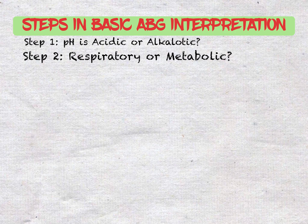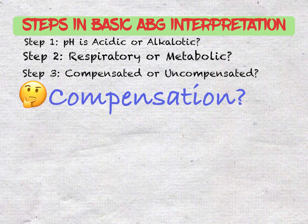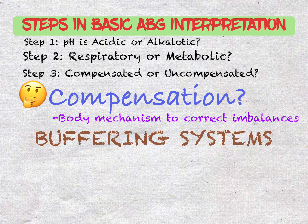The third step is knowing if the ABG is compensated or uncompensated. Compensation is the body's attempt at correcting an imbalance. In ABG analysis, we always examine whether there is compensation in this very tight balance between the concentration of acids and bases in the blood. There are different buffering systems in our body that permit blood and other bodily fluids to maintain a narrow pH range, and three major buffer systems are responsible for regulating blood pH.